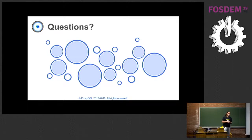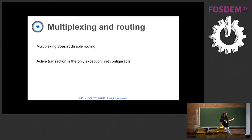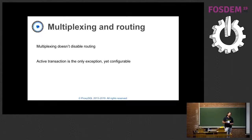This is why I normally say do not send all the SELECT statements to the reader, because your example is a clear case of when you should not. Multiplexing does not disable routing, so you can have the write statements go to the master and SELECT statements go to the slave. But if you are sending a SET '@' to the master, you should not send the SELECT to the slave. What I normally recommend is that you identify which SELECT statements are safe to be sent to the slave, and you only send those instead of everything.